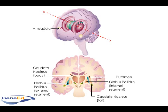The basal ganglia consist of several structures, including the caudate nucleus, the putamen, the globus pallidus, and the amygdala.